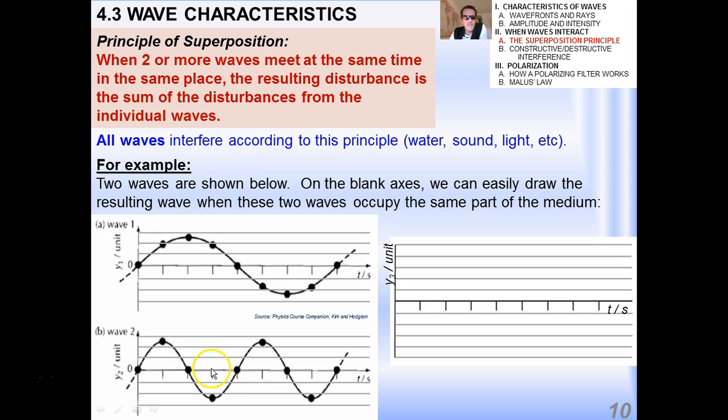So for example, if I have two waves as shown below, these are two displacement time graphs, two different waves with different frequencies. It looks like they have similar amplitudes. On the blank axes here, you can easily draw the resulting wave when these two waves occupy the same part of the medium by applying the principle of superposition. So let's kind of go through point by point, and then maybe we'll sketch the wave together. I'm calling this y3, because this is y1, y2, and y3. So the first point, y1 plus y2 is 0 plus 0, so it's 0. The next point, it looks like y1 is at 2, and y2 is at about 2.5, so that would be about 4.5.